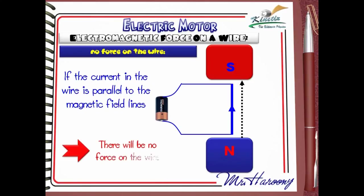If the current in the wire is parallel to the magnetic field lines, there will be no force on the wire. Even if the current is reversed, the wire will not move, as the current and the magnetic field are still parallel to each other.